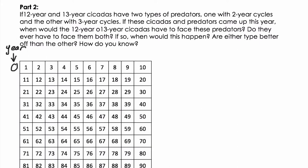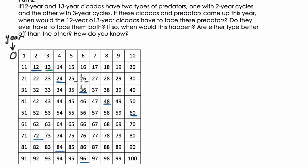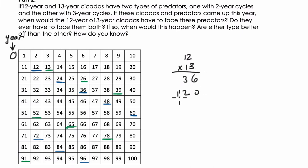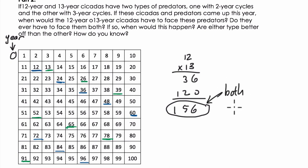Our 12-year cicadas emerge at multiples of 12: 12, 24, 36, 48, 60, 72, 84, 96. The 13-year cicadas start at 13, then 26, 39, 52, 65, 78, 91. Notice they never emerge at the same time within this 100-year span. That'll happen further on — it won't be until 12 times 13, which is 156 years, before you have a common multiple of both 12 and 13. So within our grid, these two cicada types don't coincide.